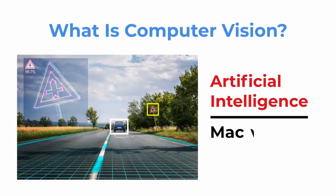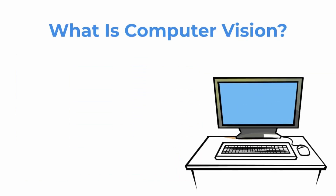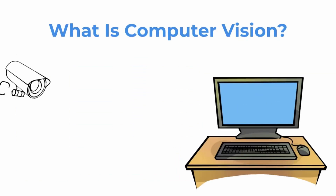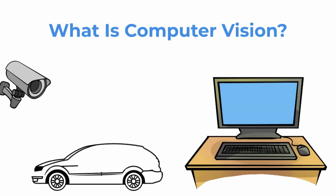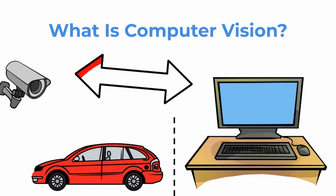Computer vision is made possible by advances in artificial intelligence and machine learning. These technologies allow computers to learn how to detect and recognize patterns in images. We will explore the history of computer vision and its applications, showing some examples using Python with OpenCV and PyTorch. Python is the most supported language in this field.